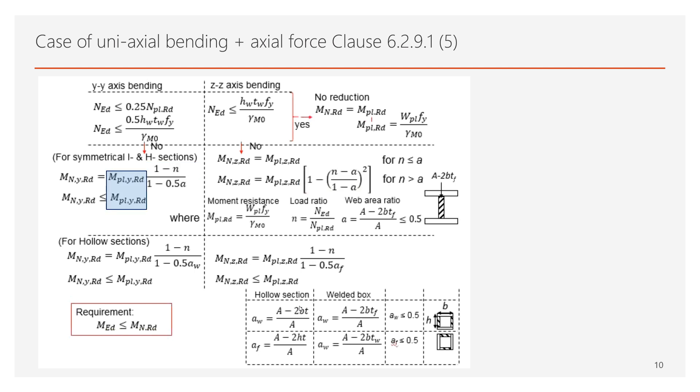The moment resistance for the yy axis and for the zz axis differ, but both of them are defined in the function of n and a, where n is the so-called load ratio, and a is the web area ratio. The highlighted rectangles represent the reduction factors in the function of n and a. The MPLYRD and MPLZRD are the full bending moment capacity of the member without any reductions.